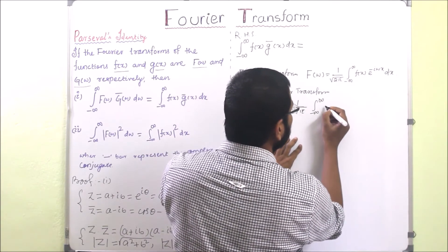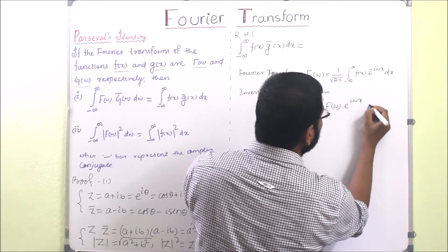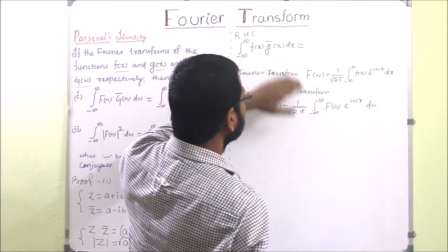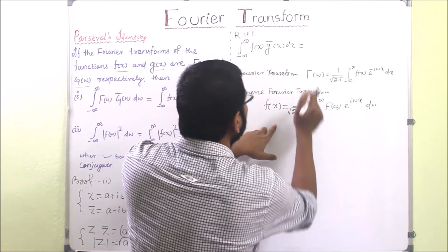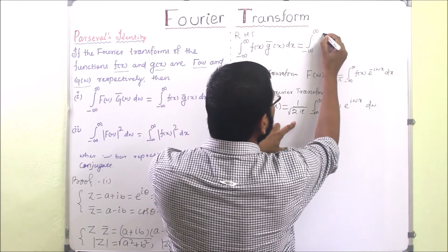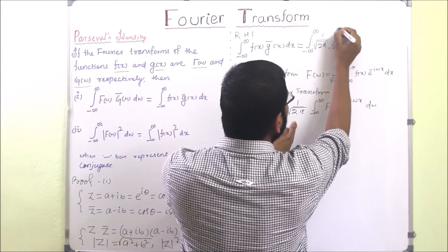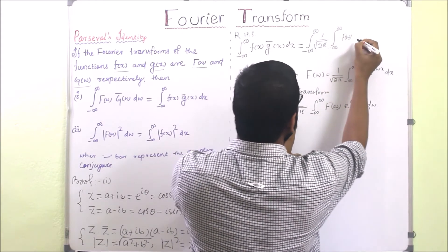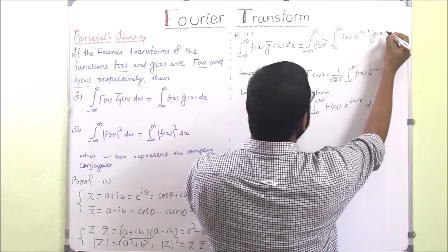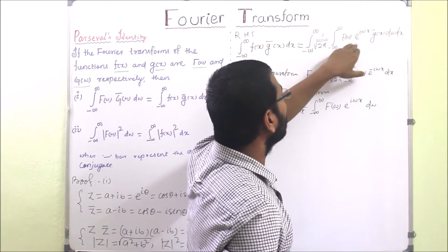We substitute the inverse Fourier transform formula in place of f(x) in the RHS integral. This gives us the integration from minus infinity to infinity of the quantity 1 over square root of 2π, times the integration from minus infinity to infinity of F(w) e to the power iwx dw, times g-bar(x) dx — all written together as a double integral.